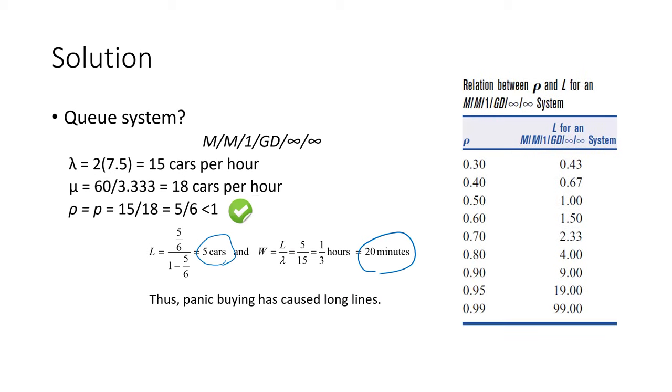Now we saw that rho changed from 0.5 to five sixths, and L changed significantly from one to five. Now I'm going to increase rho just to see how L changes. I don't increase rho beyond one because beyond one, the system never settles down. As I increase it, L can go up to a hundred cars. If your rho is 0.99, lambda gets closer to mu. If lambda increases to 17 or close to 18, you're going to expect a huge line.